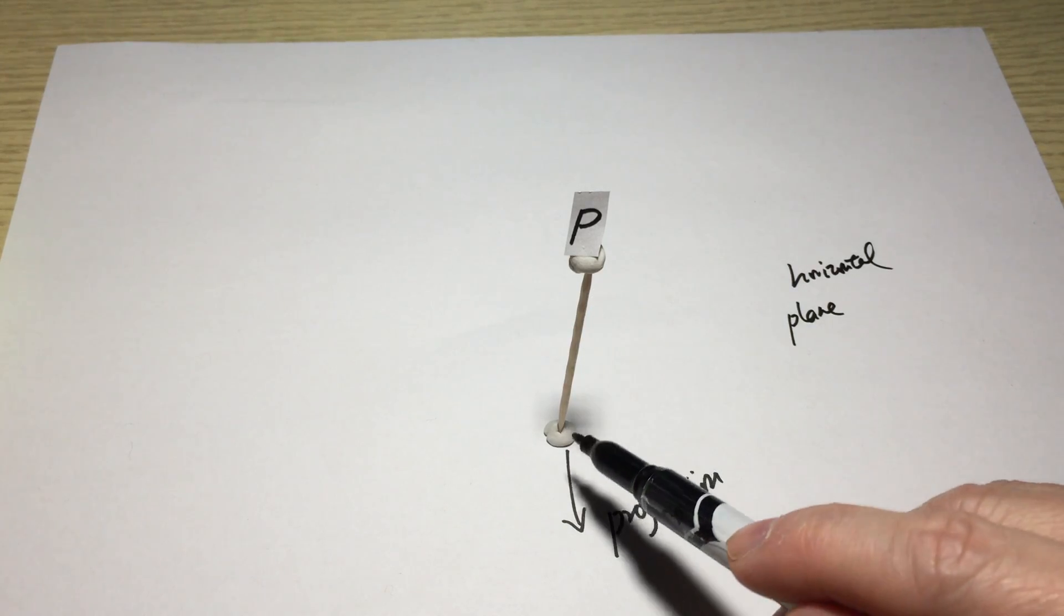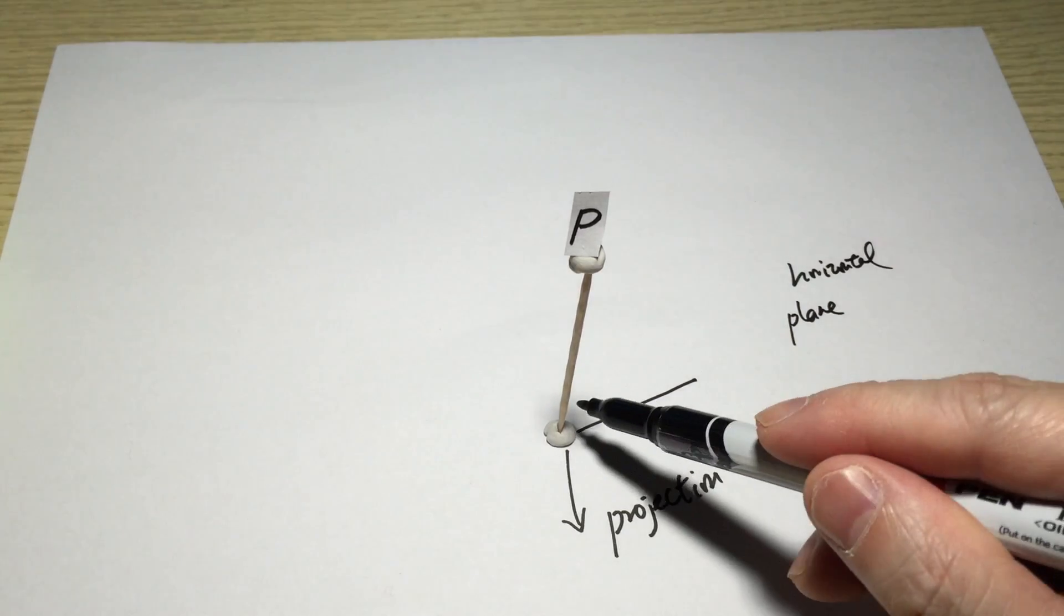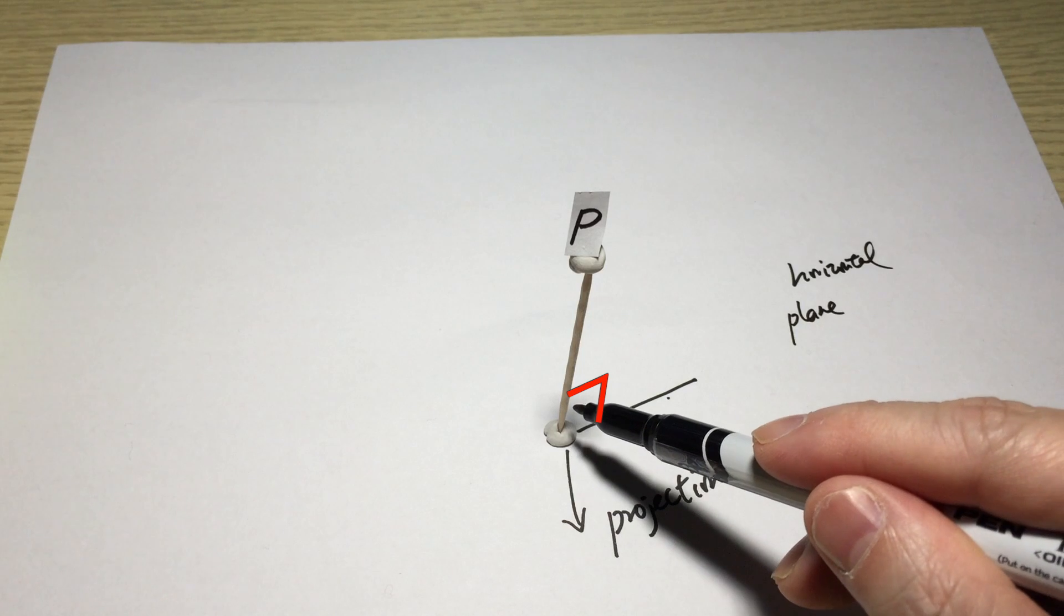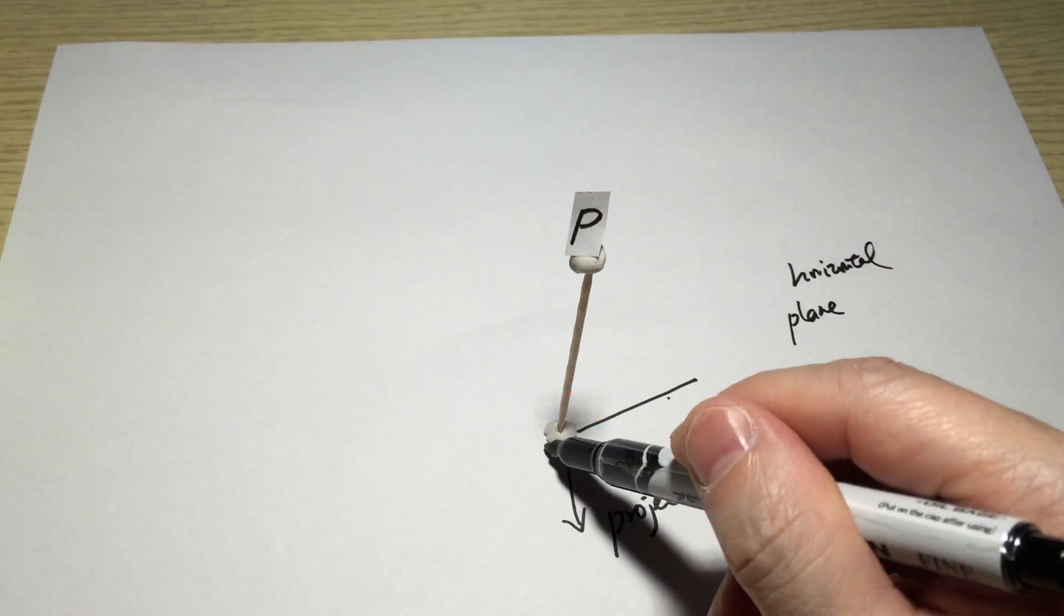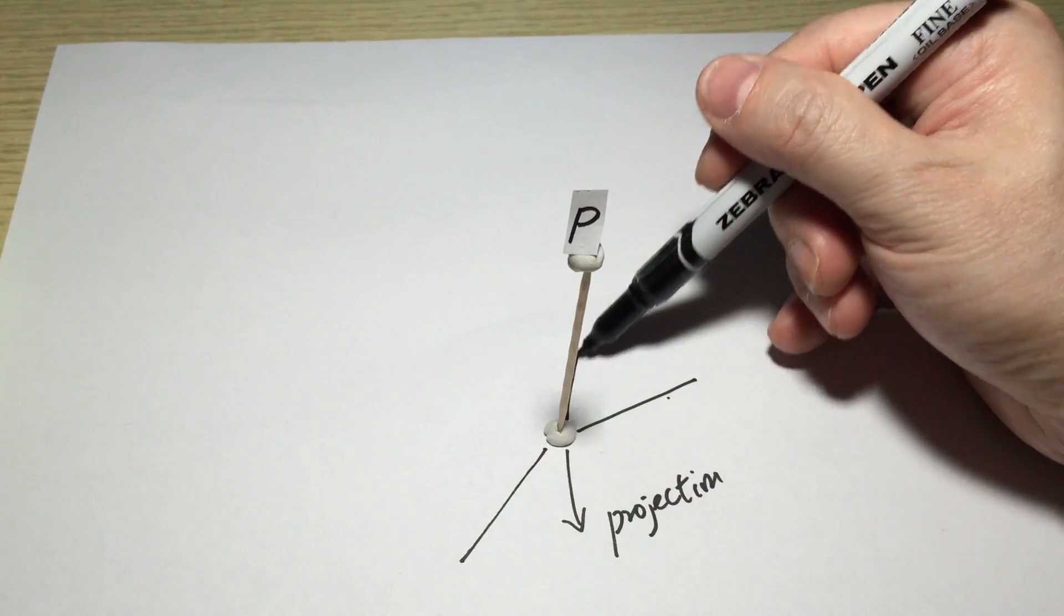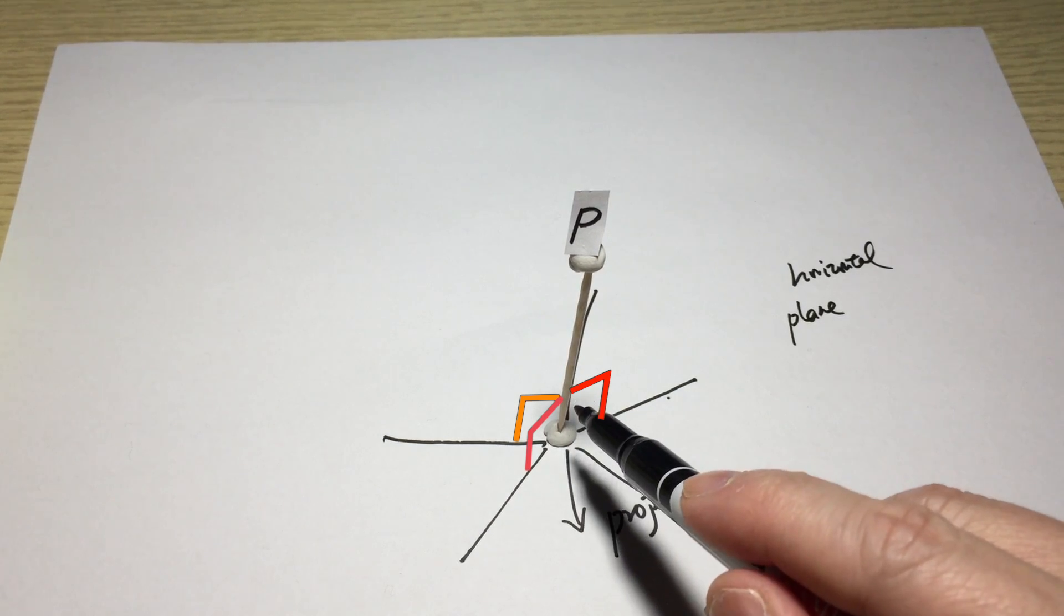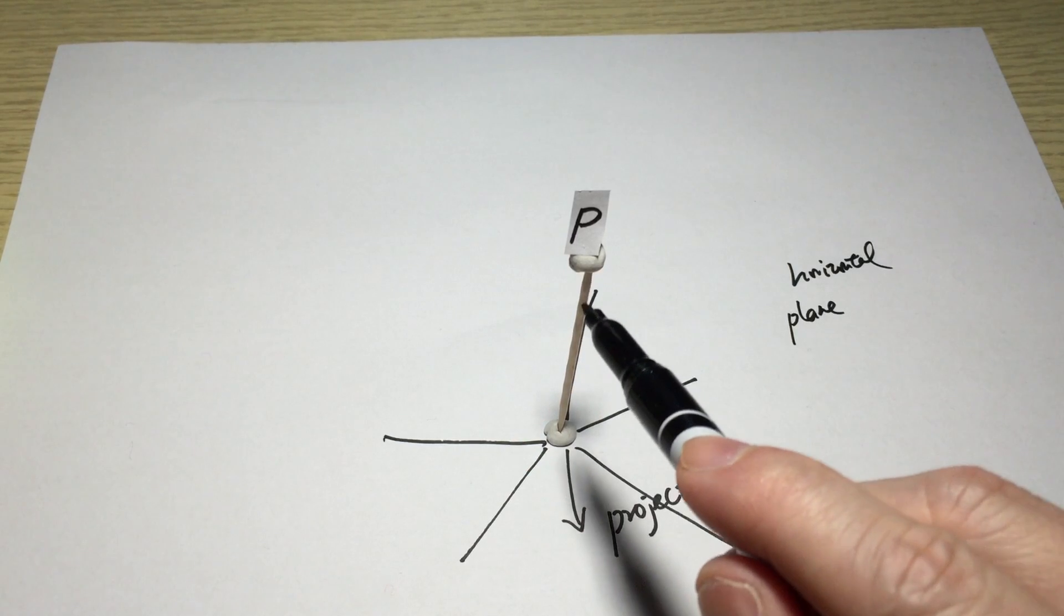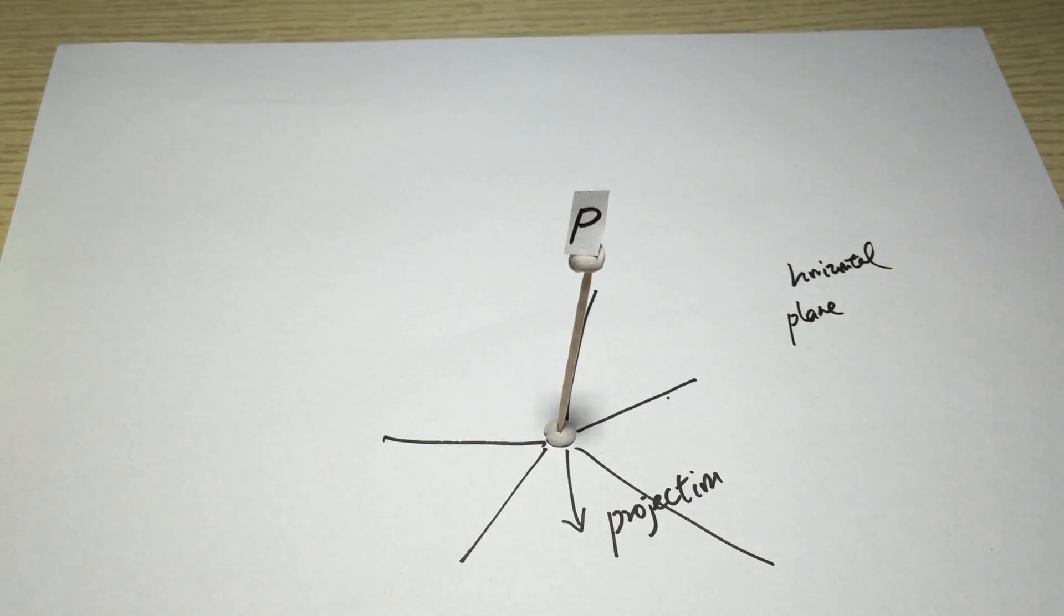And if we draw any line on the plane, this angle - the angle between this horizontal line and this toothpick - will always be a right angle. And again, if we draw some other lines, these angles will always make a right angle with the toothpick. So that means this is the perpendicular distance of point P from the horizontal plane.